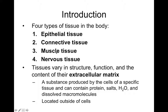Muscle tissue is found throughout the body and all muscle tissue acts to produce force — moving substances in your body, storing materials, or moving your entire body around. Nervous tissue is excitable, meaning it can transmit impulses, and can direct the activities of other tissues. For instance, nervous tissue — which includes your brain, spinal cord, and nerves — can excite glands to make secretions or excite muscle to contract. We think of nervous tissue as the controlling tissue of the four types.